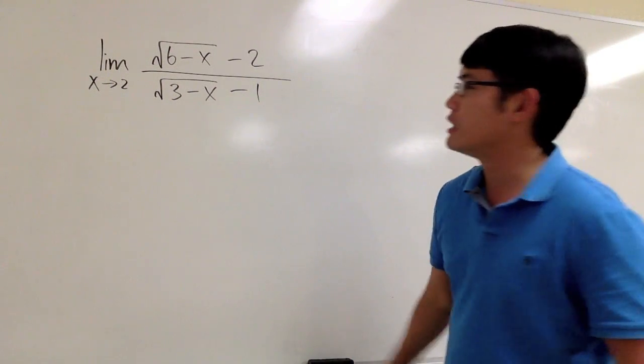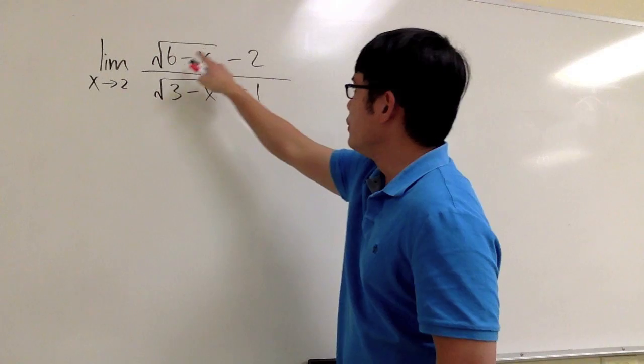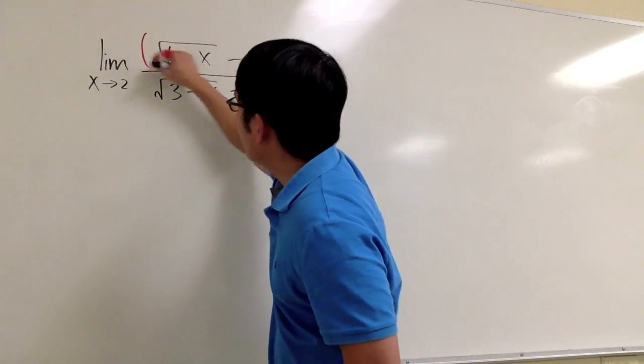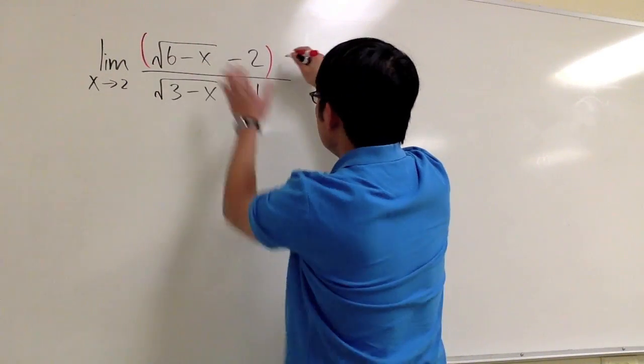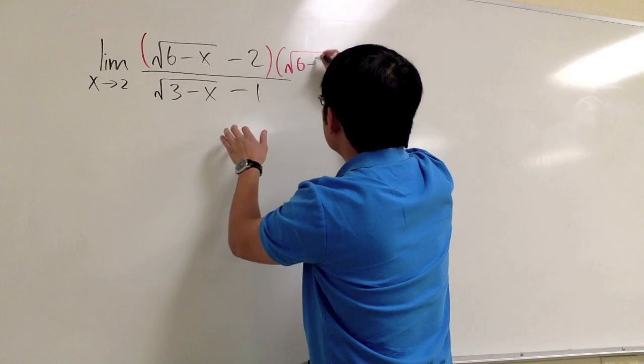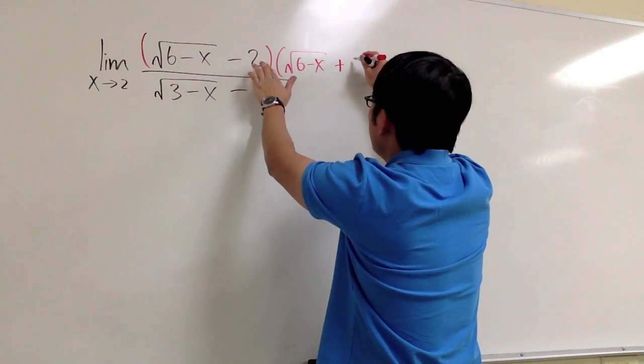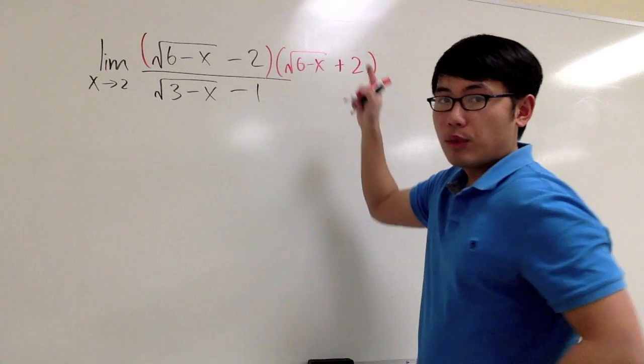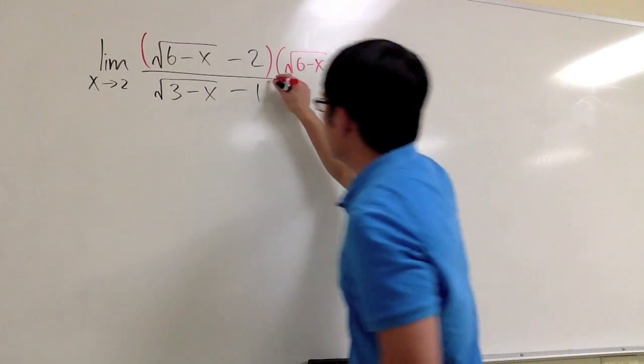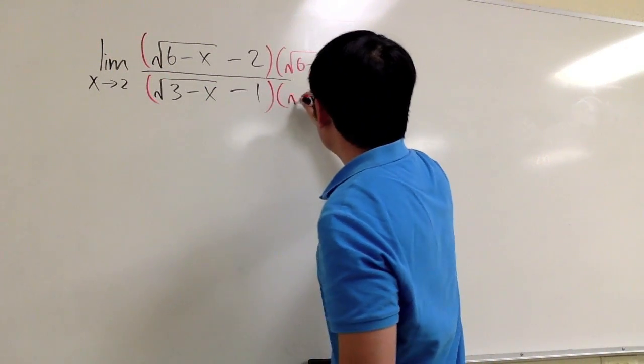Let's take care of the top first, namely this part. Now, looking at this, we are going to multiply the top by the conjugate, which is square root of 6 minus x, but I will change the minus to plus, and then we have the 2 right here. And I will multiply that on the denominator as well.